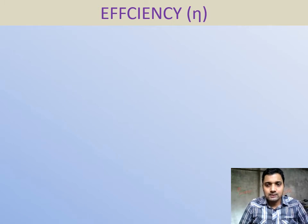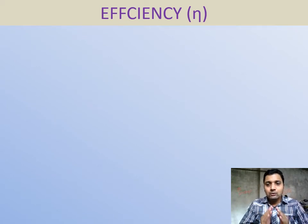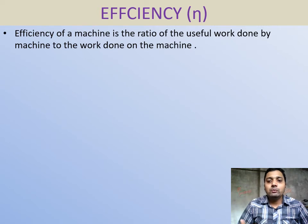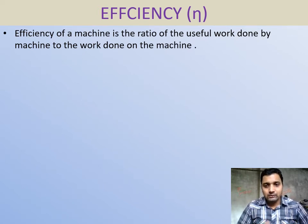Now one more term: efficiency. Efficiency changes depending on the machine. Consider a test of 100 marks where all students get the same question paper and same time, but some get 20 marks, some 90, some 30, some 80 — because all have different knowledge and talent. Similarly, efficiency is work output divided by work input, or power output divided by power input, or energy output divided by energy input. When calculated as a percentage, it is called efficiency percent.